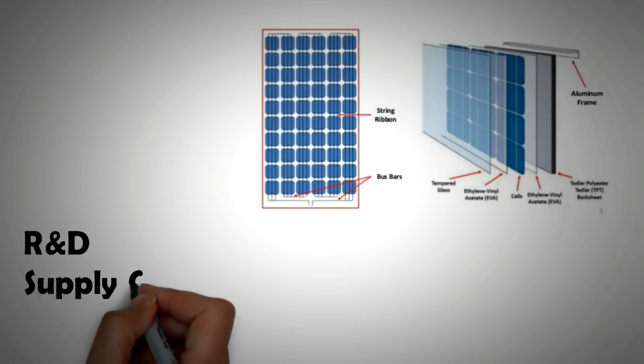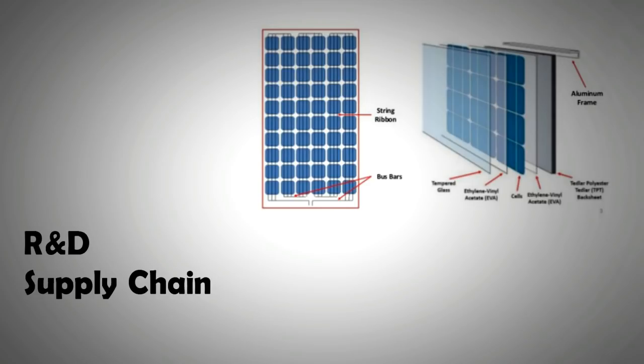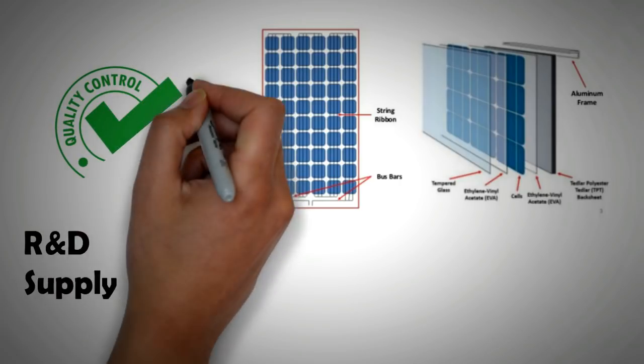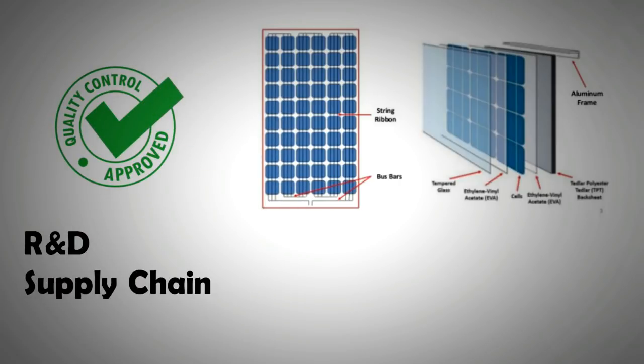Some manufacturers have their own R&D capability. This ensures that designs are optimized, each component is performing to the fullest and the integration of these panel components is seamless with little losses between them. Furthermore, these manufacturers maintain a strict control on the supply chain with respect to quality. Whereas low-quality module producers generally do not have an R&D center and have less control on the supply chain products.